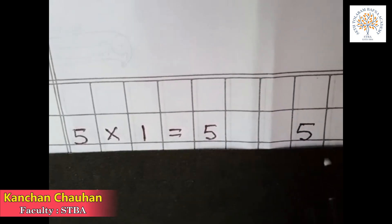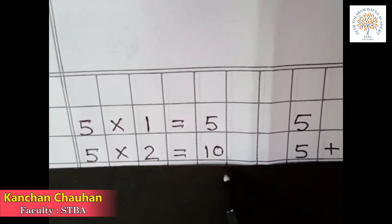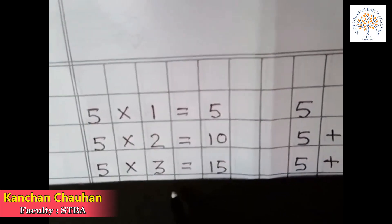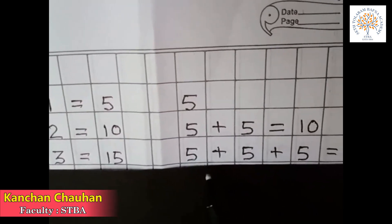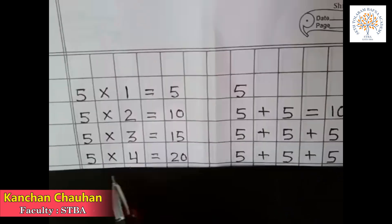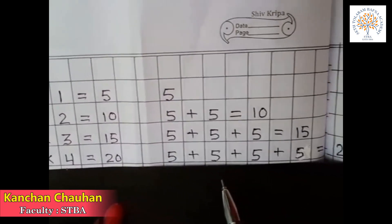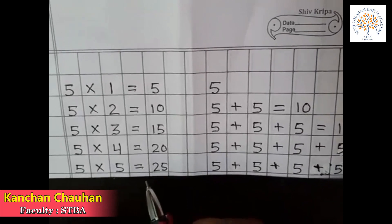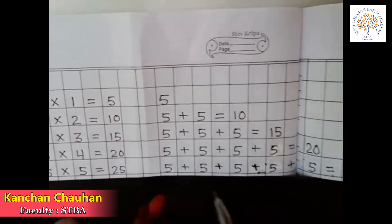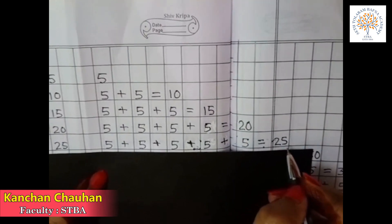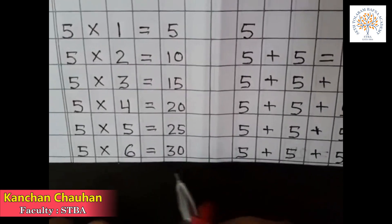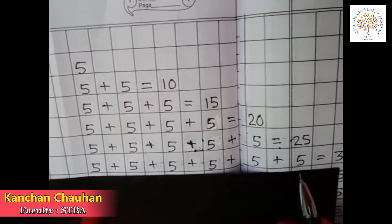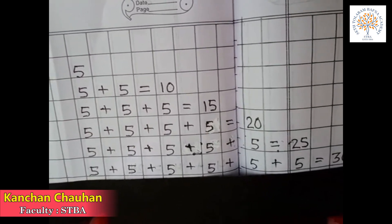5 1s are 5 means 1 times 5. 5 2s are 10 means 2 times 5 is equal to 10. 5 3s are 15 — it means 3 times 5 is equal to 15. 5 4s are 20 — it means 4 times 5 is equal to 20. 5 5s are 25 — it means 5 times 5 is equal to 25. 5 6s are 30 — it means 6 times 5 is equal to 30.